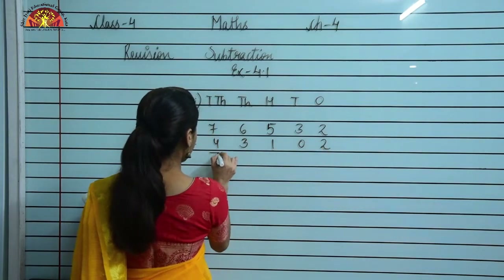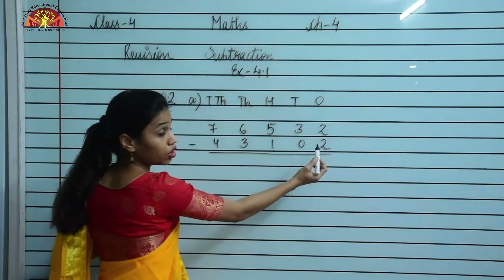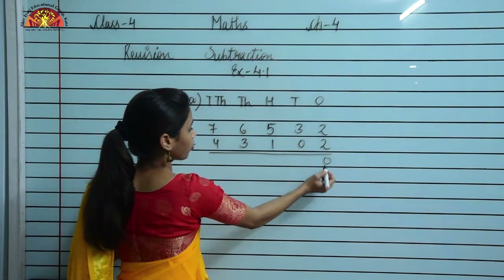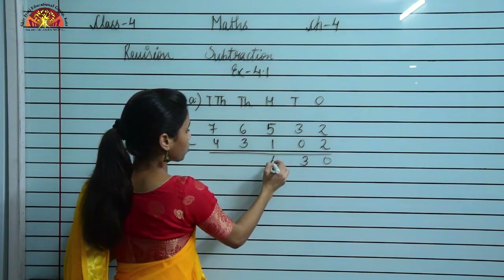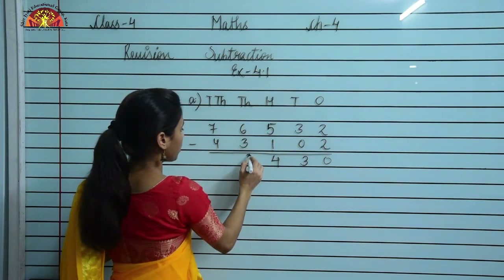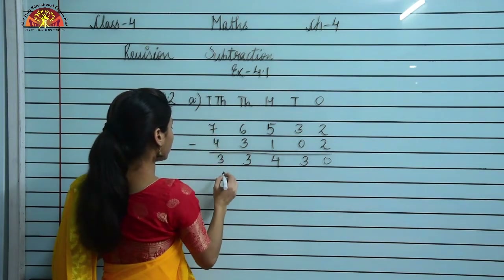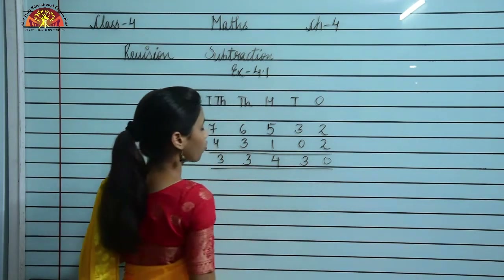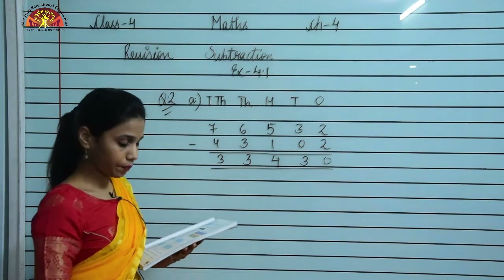Let us do the subtraction of these numbers. 2 minus 2 is 0, 3 minus 0 is 3, 5 minus 1 is 4, 6 minus 3 is 3, 7 minus 4 is 3. Therefore, the answer is 33,430.